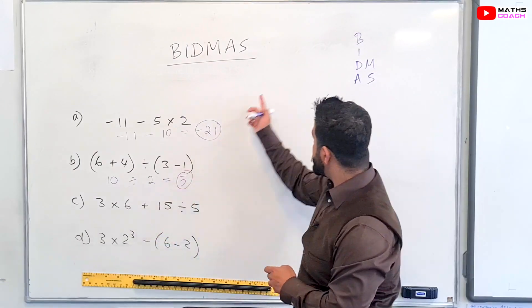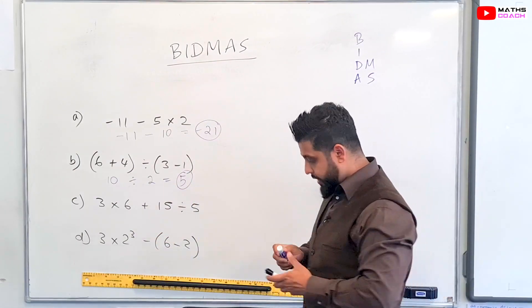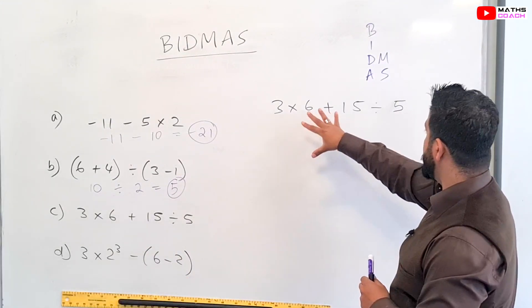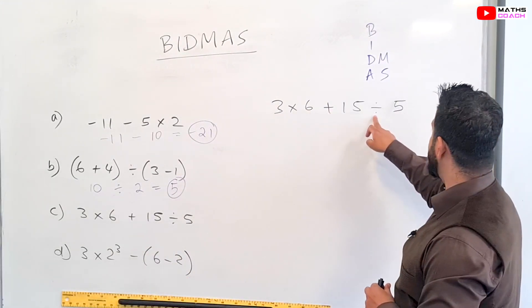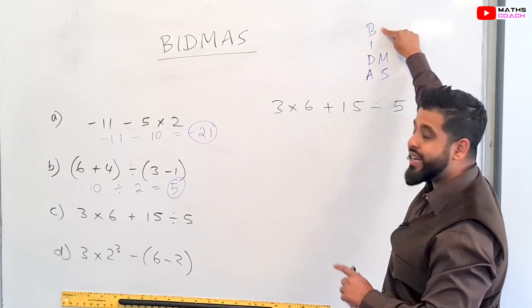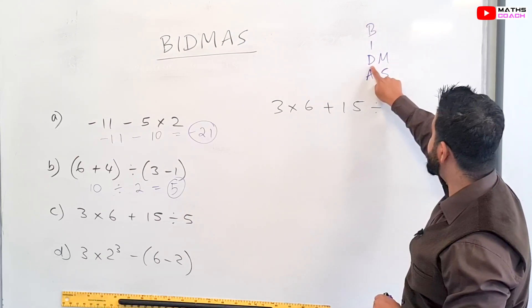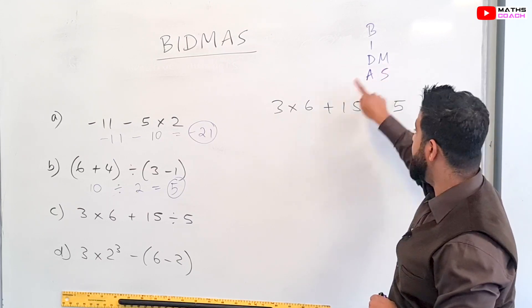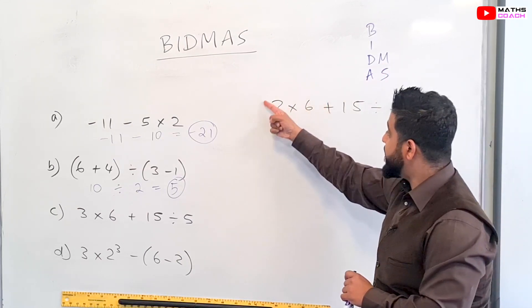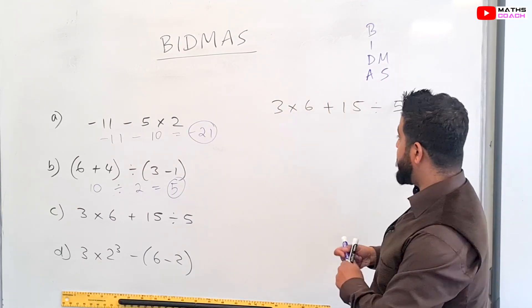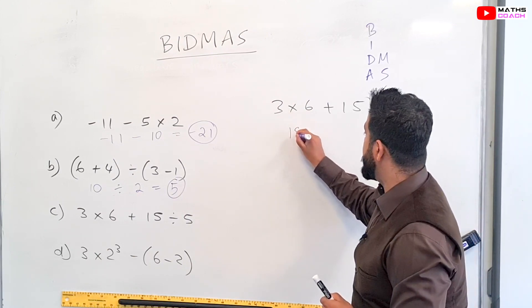Now for the last two, I'm just going to rewrite the last two up here on the board. So once again we look at that: 3 × 6 + 15 ÷ 5. Do we have brackets? No. Do we have indices or powers? No, we don't. We have division and we have multiplication. So like I said before, the multiplying comes first, so we can calculate 3 × 6 which is 18.